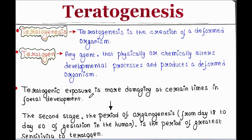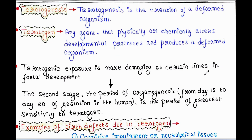Teratogenic exposure is more damaging at certain times in fetal development. The second stage, the period of organogenesis — that is from day 18 to day 60 of gestation in the human — is the period of greatest sensitivity to teratogens.